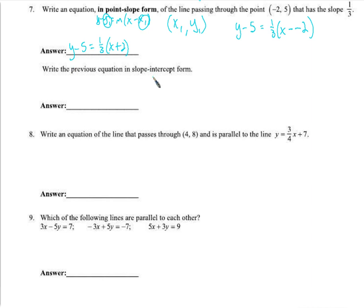If I want to write it in slope intercept form, I could go about it several different ways. But, I could just take this equation and get y by itself. Because slope intercept form is y equals mx plus b. So, I could distribute the 1 third. Now, I have y minus 5 equals 1 third x plus 2 thirds. Add 5 to both sides. Add 5 to this guy here. y equals 1 third x plus 15 thirds is 17 thirds. So, y equals 1 third x plus 17 thirds.